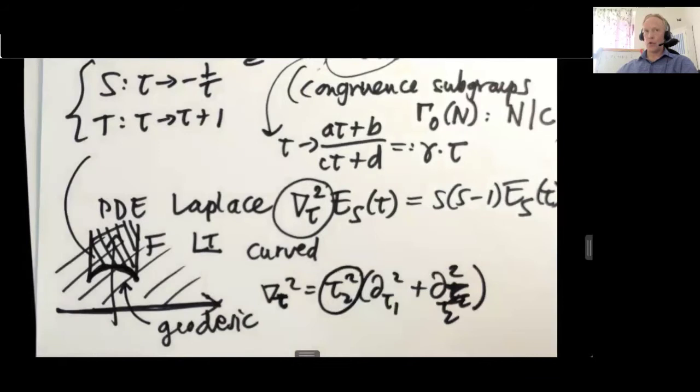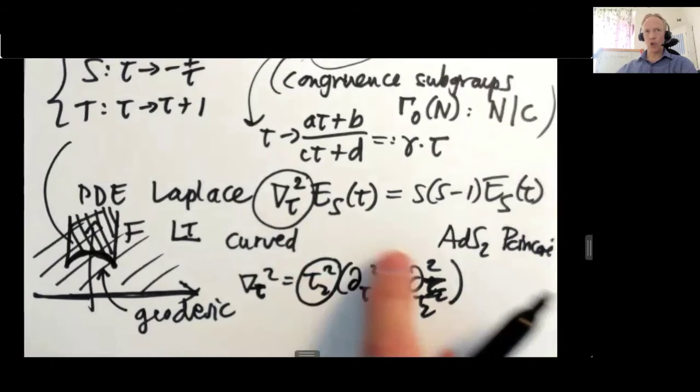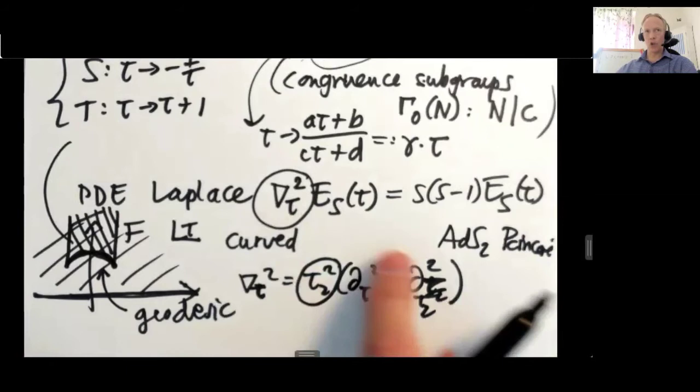So this Laplacian sub-tau squared has a factor here. And those of you who know about ADS-CFT, you may be familiar with this, that this looks a lot like ADS-2 in the Poincaré metric. This is the upper half plane curved Laplacian that looks like this. And the claim is when I act with this differential operator on my non-holomorphic Eisenstein series, I discover that it's an eigenfunction.